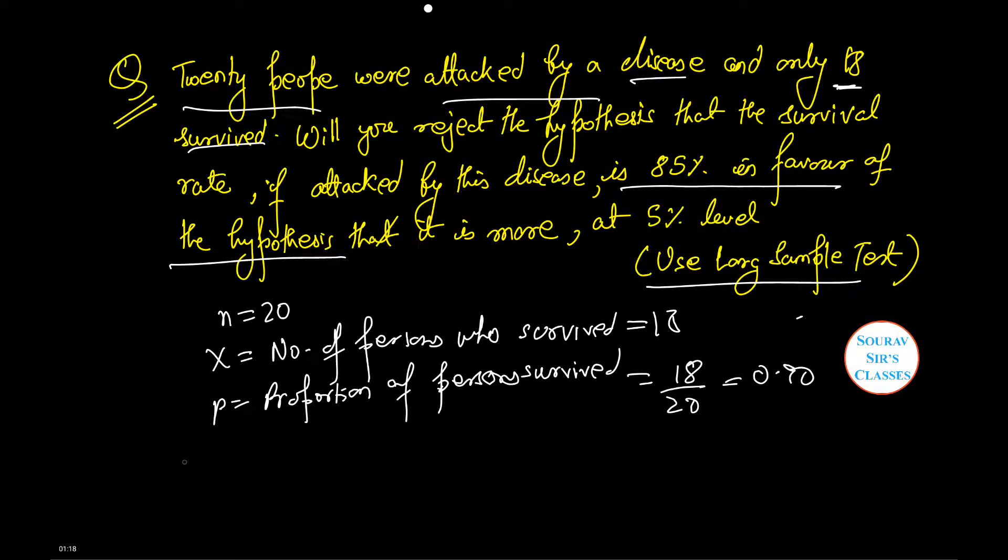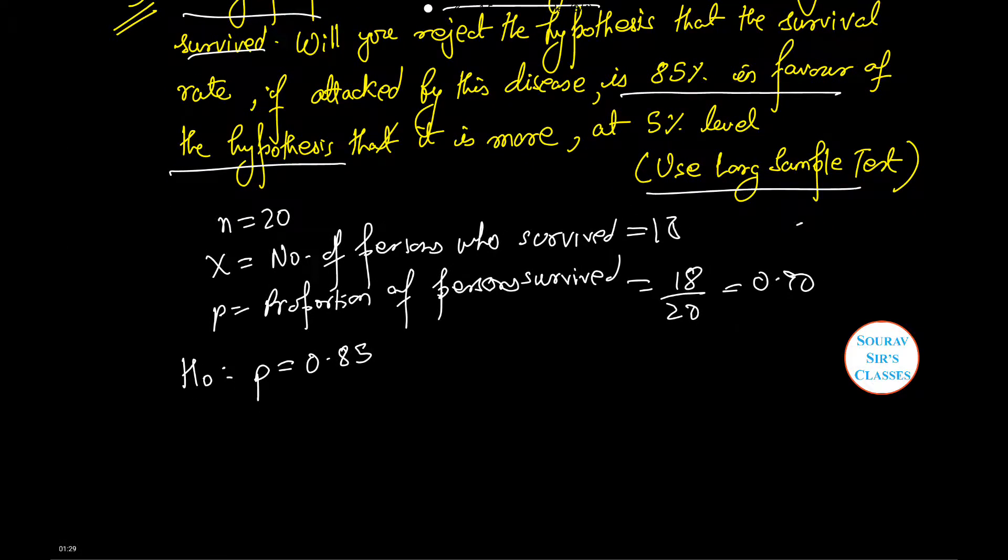Therefore, we can write the null hypothesis H₀ as p equals 0.85, that is, the proportion of persons survived after attack by the disease in a lot is 85%. Let us define the alternative hypothesis that p is greater than 0.85. Note this is a right-tailed alternative.